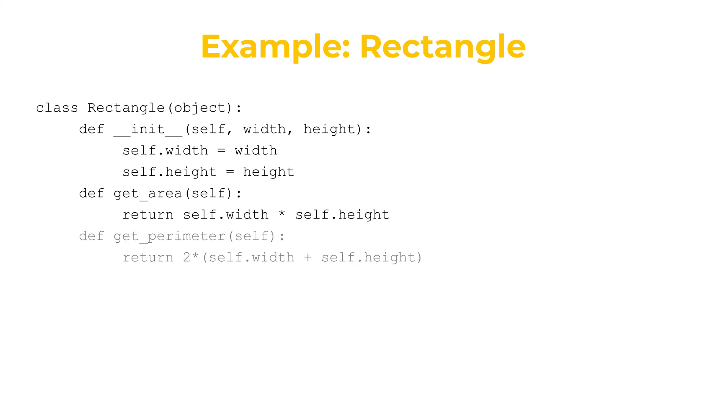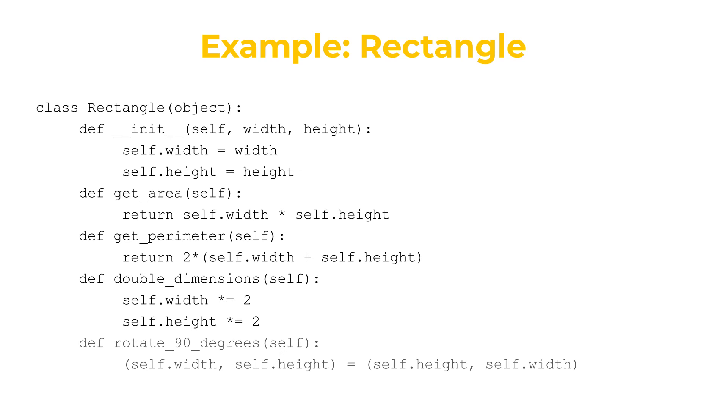Okay, let me show you the definitions of some other methods. We have get_perimeter, which returns 2 times self.width plus self.height. We have double_dimensions, which modifies the object by doubling the width and the height. And we have rotate, which rotates the rectangle by swapping the width and the height.